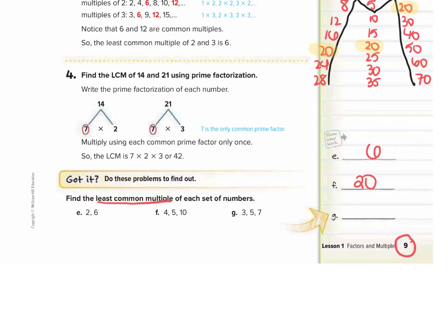For letter G, we're going to find the least common multiple of three, five, and seven. I'm going to show you a different method you can use. Something else you can do is only find the multiples of the largest number, and as you're finding them, check each multiple to see if the other two numbers also go into that number. The first number that all three numbers can go into would be your least common multiple. So I'm just going to find the multiples of seven for now.